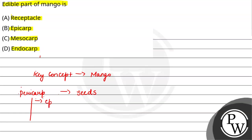The outermost layer is epicarp. The middlemost layer is mesocarp. And the innermost layer is endocarp. The epicarp in mango forms the outer peel — basically the thin skin/छिलका area.